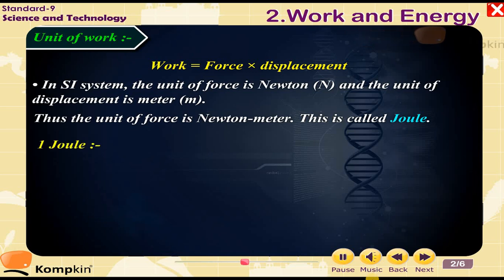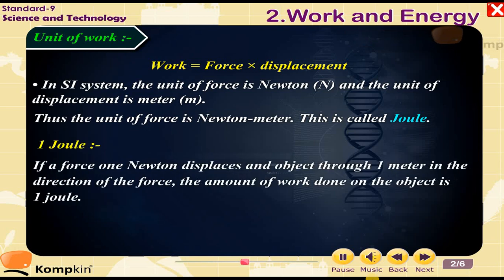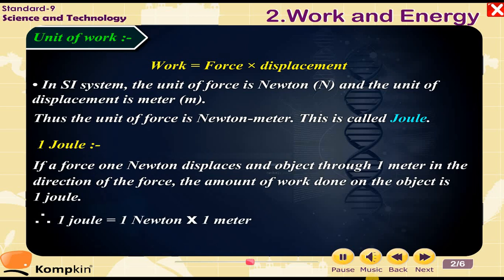1 joule is defined as: if a force of 1 newton displaces an object through 1 meter in the direction of the force, the amount of work done on the object is 1 joule. Therefore, 1 joule = 1 N × 1 m.